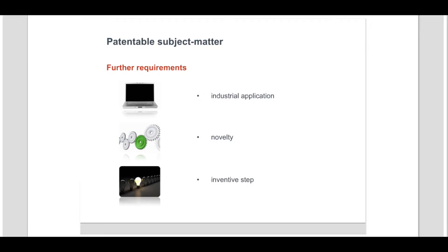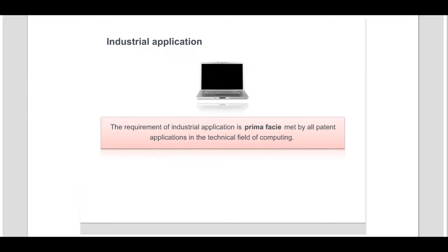We will now look at each of these requirements in turn. The requirement of industrial application is prima facie met by all patent applications in the technical field of computing, since computing means and programs for computers can be produced on an industrial scale.